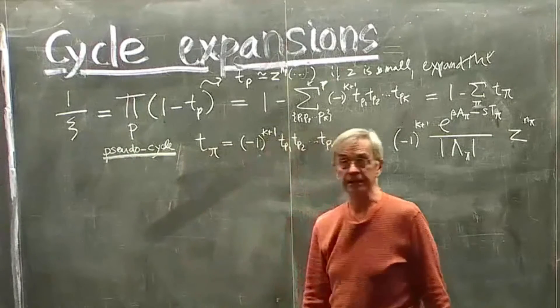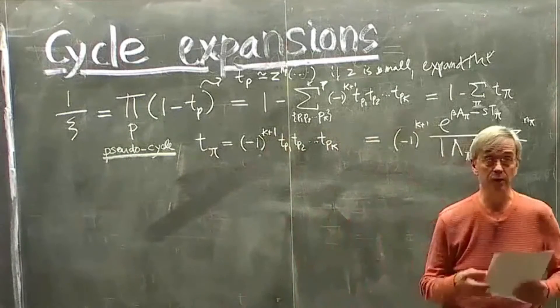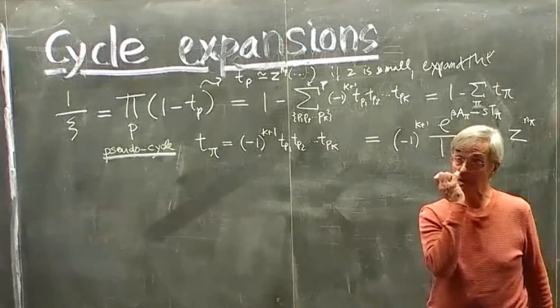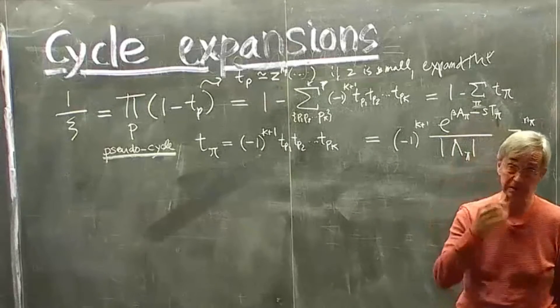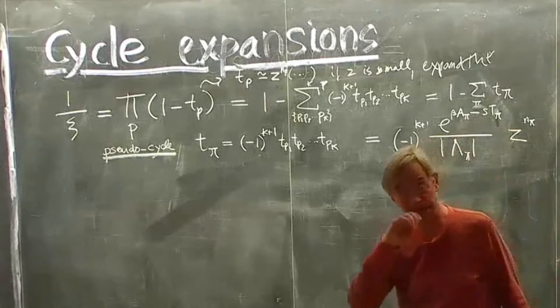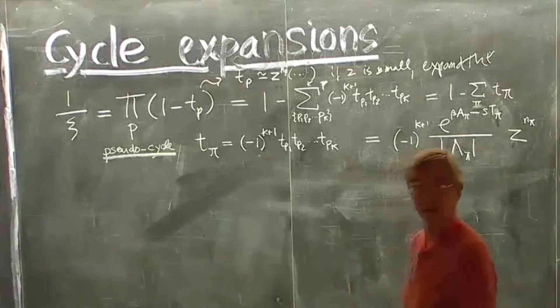And indeed, in literature, especially in quantum chaos literature, they have an extremely clumsy way of stating this. It has somebody's name, it's somebody's sum rule, etc., and it's only asymptotically true.